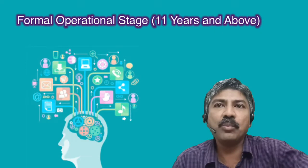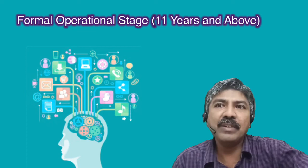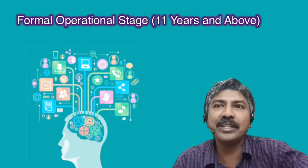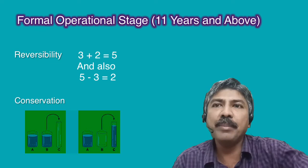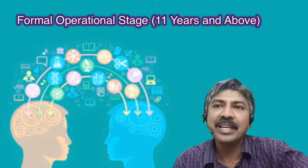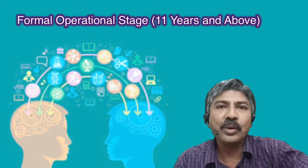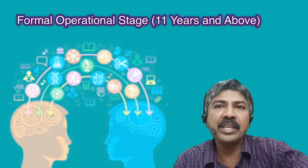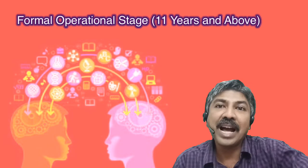It also helps them to store information more systematically and retrieve it when required. This equips them to even create their own new rules for playing a particular game by modifying it for convenience. It also helps them to process reversibility and conservation. Hence these new abilities, which Piaget feels are because of brain development, can enhance speed of learning a second or new language and also gain proficiency in the language commonly used for communication.